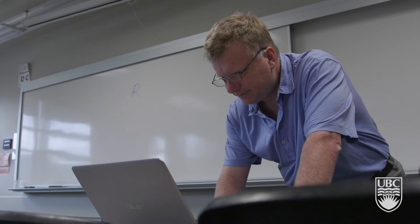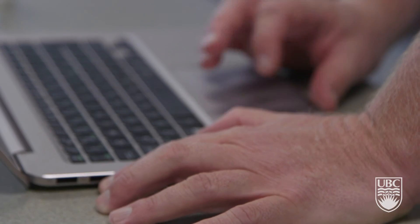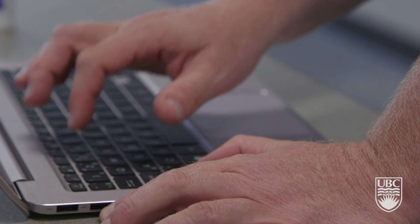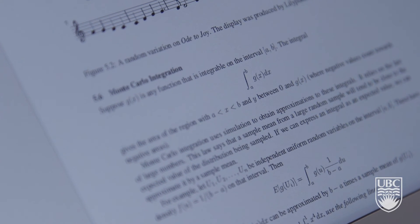One of the big changes that we made to the second edition was we added several simulation examples. One in particular that I'm very proud of is involving some classical music in which we randomize some of the content of Beethoven's Ode to Joy. Unfortunately, the result is not a big improvement.